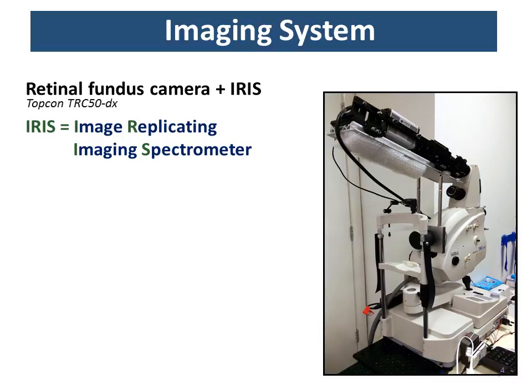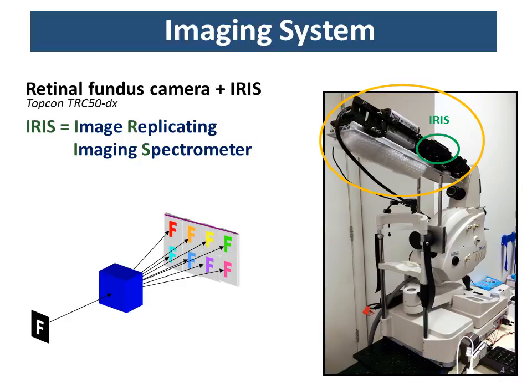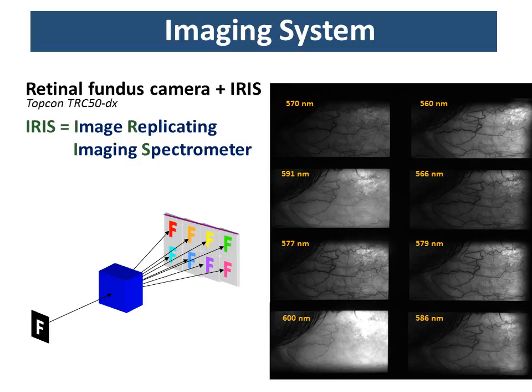The imaging system we used was a retinal fundus camera modified with the Image Replicating Imaging Spectrometer, or IRIS. Javier talked a little bit about this earlier — it's a really useful research tool. IRIS works by taking a white light image and spectrally demultiplexing it into individual waveband images on a single detector. It enables snapshot multispectral imaging, which gives us excellent time resolution.